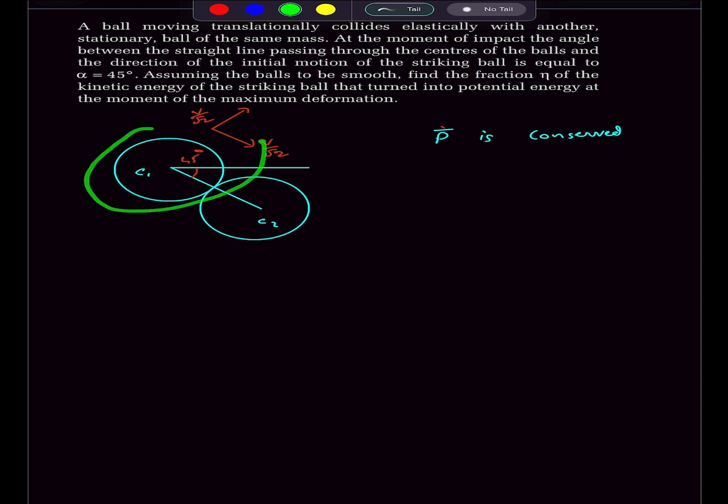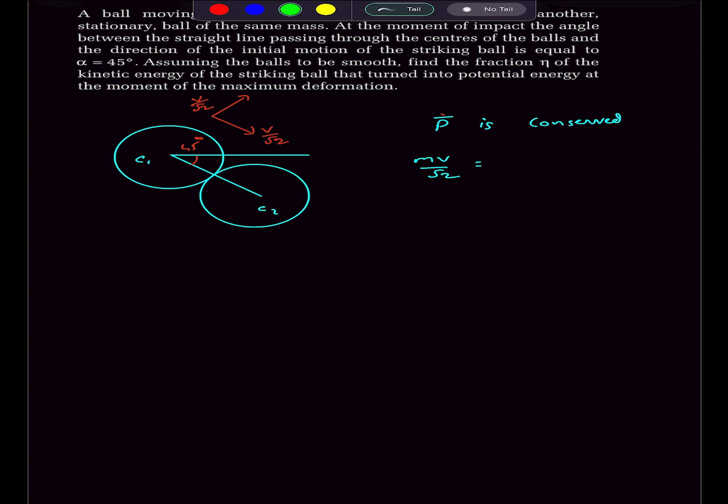So before the collision, only this ball had the velocity and its velocity was equal to V by root 2. So its momentum taking this direction as the positive direction would be M V by root 2. And the question they have asked about the situation in which the deformation between the balls is maximum.